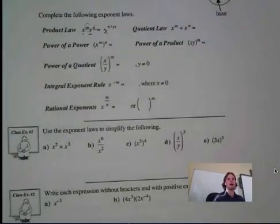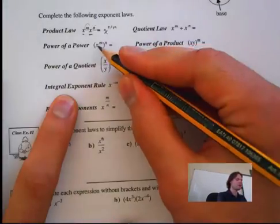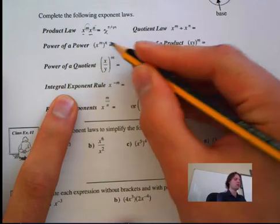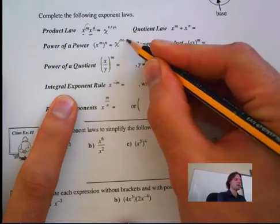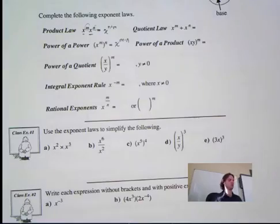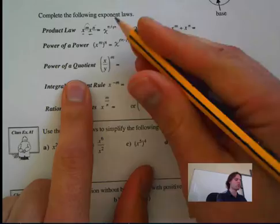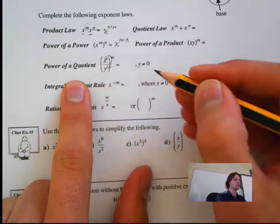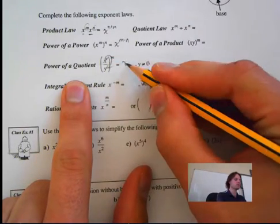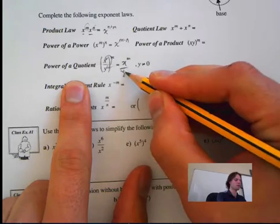Now let's take a look at the next one: the power of a power. For this one, we have a power to a power, which is x to the n multiplied by n — so we multiply the exponents. And then we have power of the quotient: this power must go into both, kind of like a distributive property, so x to the m all over y to the m.